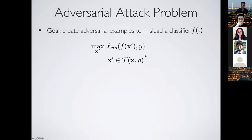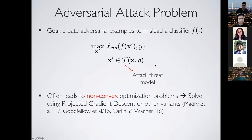This is called the attack threat model. It is often non-convex in the general case, and we solve it using projected gradient descent or some other variants.